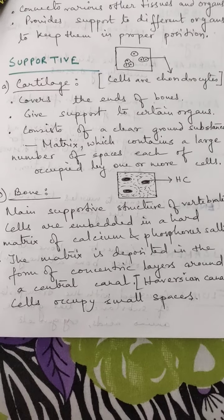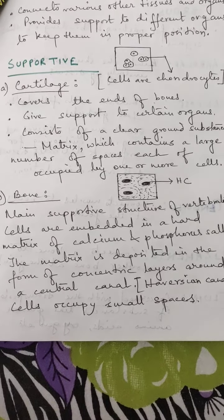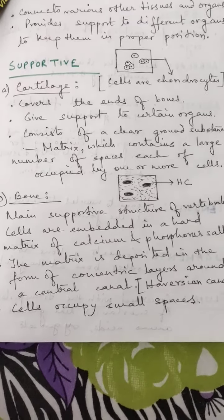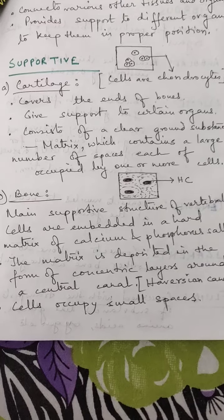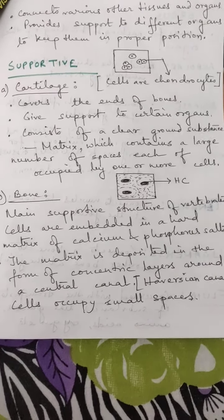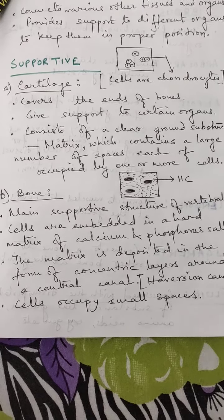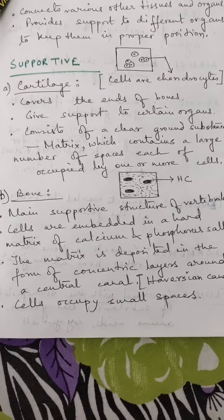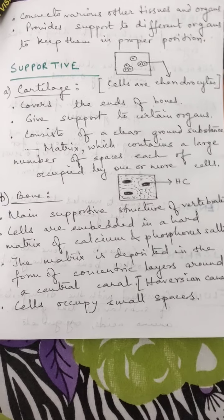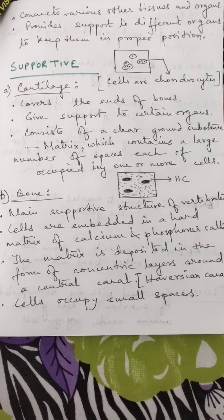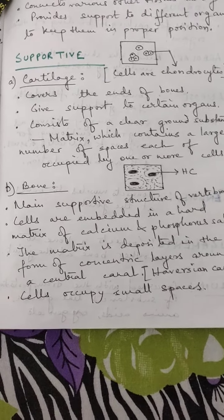The first point is it connects various other tissues and organs throughout our body. From the name we can understand it is connective tissue — its main function is connection. It provides support to different organs to keep them in proper position, and it provides support to inner delicate organs to keep them in proper position.